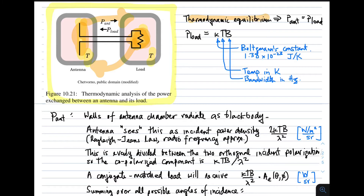If we are in thermodynamic equilibrium — temperatures equal throughout — the power originating at the antenna and sent to the load must equal the power originating at the load and sent to the antenna. The power created by the load is KTB, where K is Boltzmann's constant (1.38 × 10⁻²³ J/K), T is temperature in Kelvin, and B is bandwidth in Hertz.